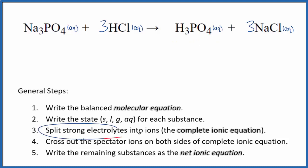So let's split the strong electrolytes apart into their ions. That's going to give us the complete ionic equation, but we do not split the weak electrolytes, in this case a weak acid, apart. It looks like this.